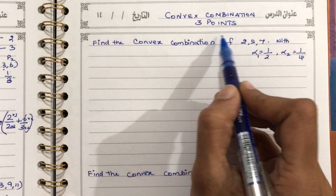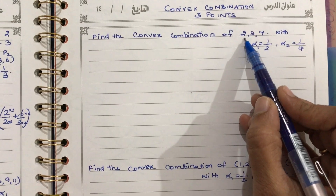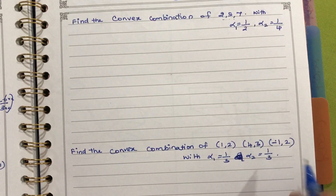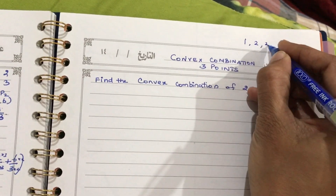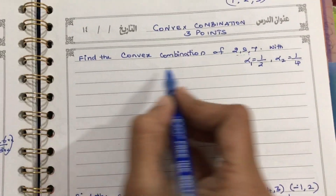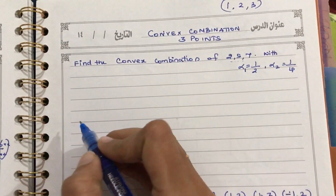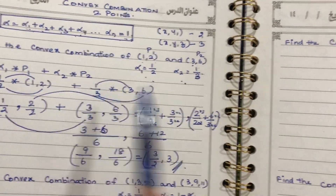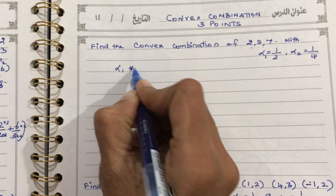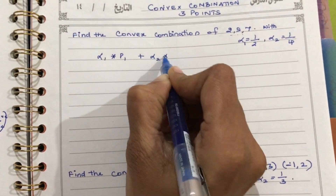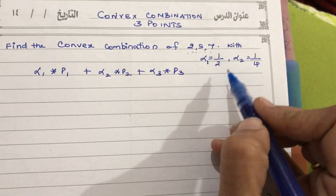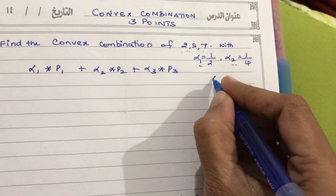Now we will see the convex combination of three points. Here you can see a one-coordinate system, a two-coordinate system, and a three-coordinate system for inputs like (1, 2, 3). As explained before, in a three-point system you will have the same type of formula: alpha 1 into P1 plus alpha 2 into P2 plus alpha 3 into P3. Here you have three points but only two alphas given.